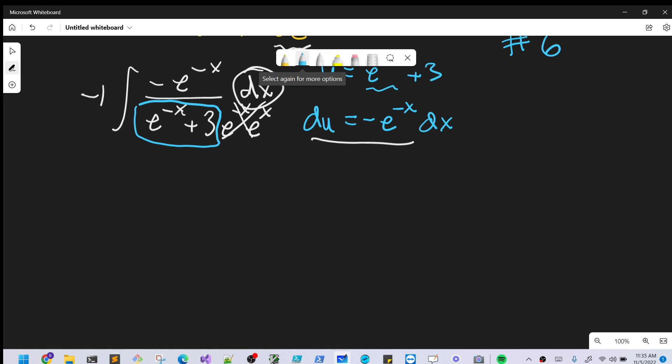Then we'll rewrite this with our substitution: -1 out front, this whole thing up here is our du, and in the denominator we'll have u. This is actually one of the easiest integrals we can do. The integral of du/u is ln|u|, so we have -ln|u| + C.